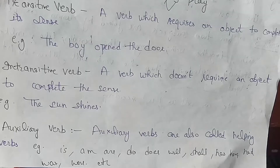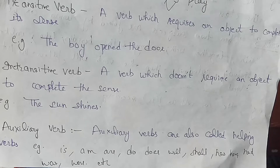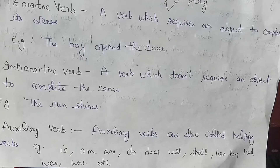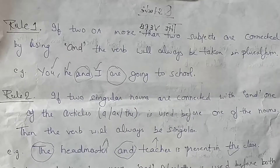This is the auxiliary verb. The auxiliary verb means a helping verb. The auxiliary verbs are: is, am, are, was, were, does, do, will, shall, has, have, had. These are all auxiliary verbs.